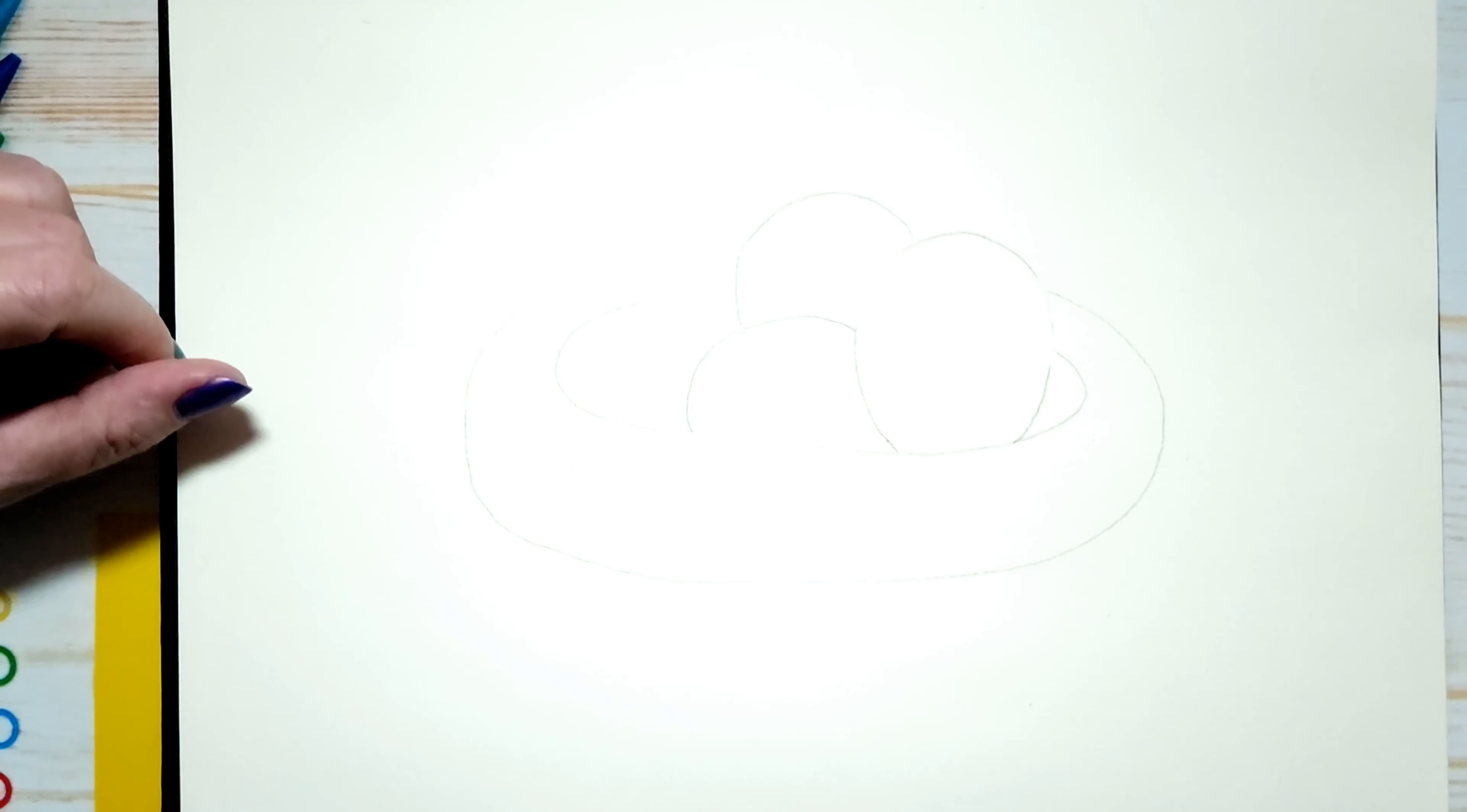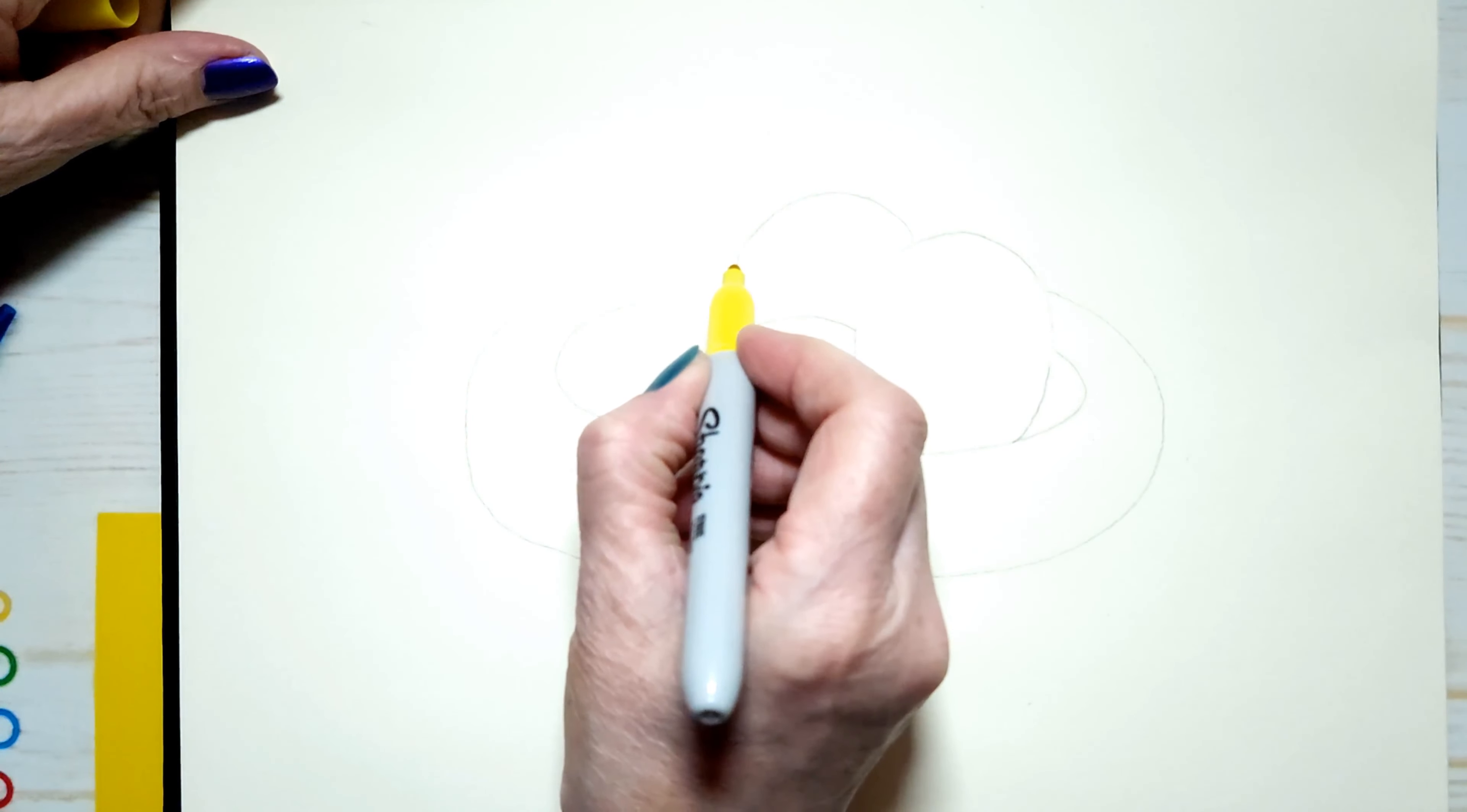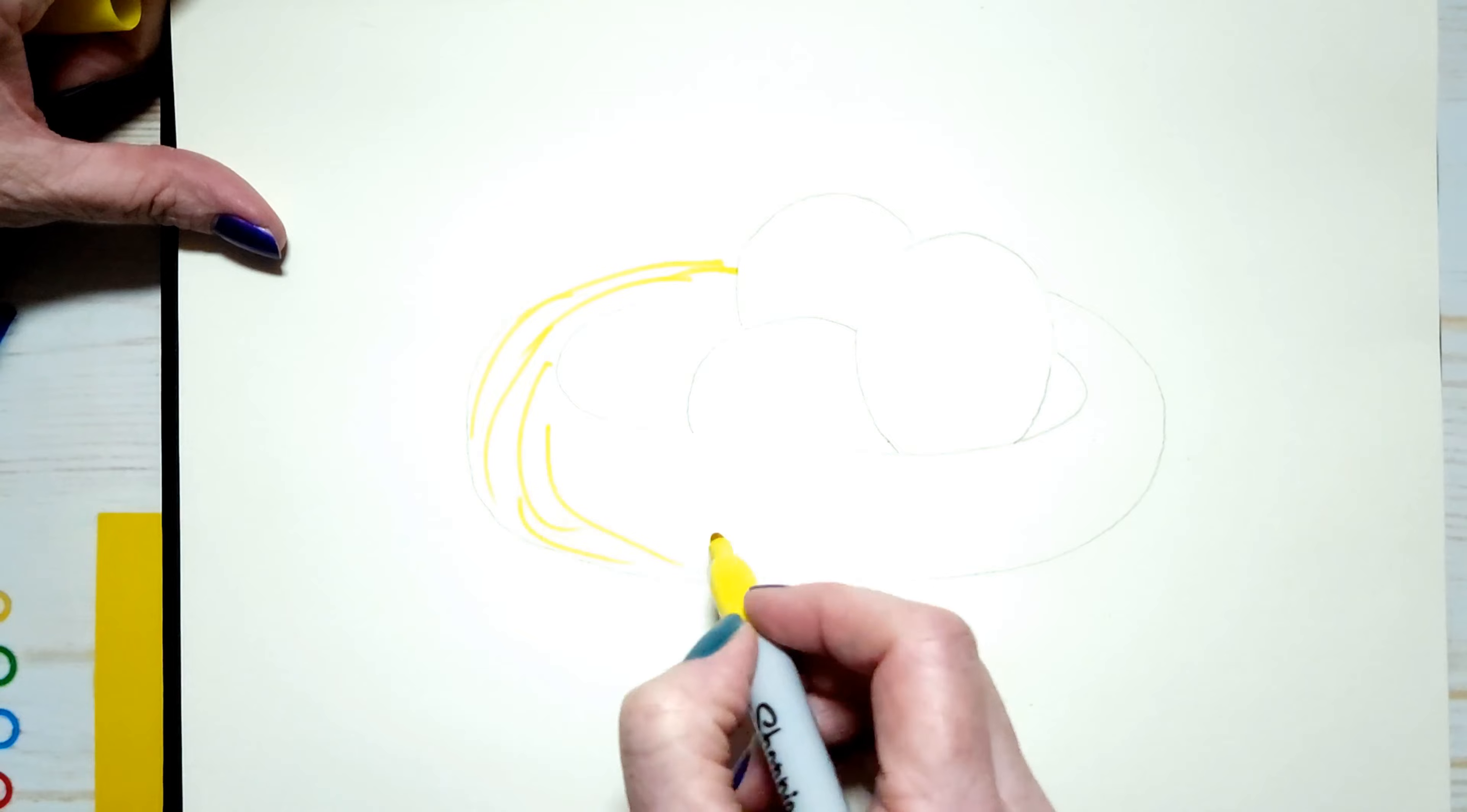Okay. So I'm going to start off with my yellow. And all I'm going to do is create some lines in the shape of that nest.